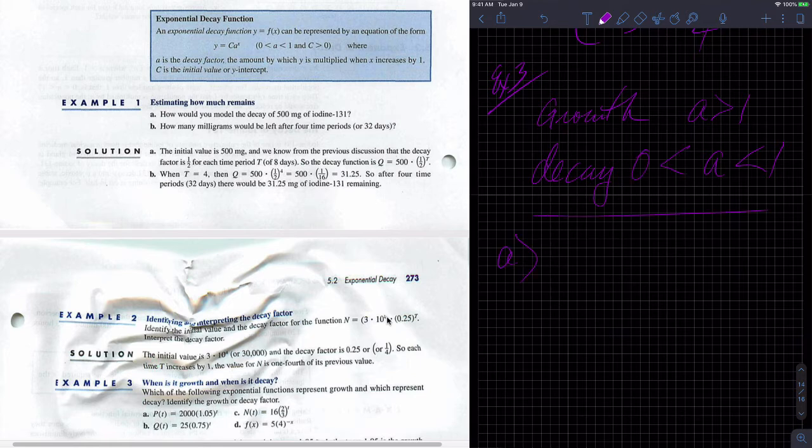So how do we do that? A. So A is the following function, P of T equals 2,000, you can just see it on the left of your screen, 1.05 to the T. Since this is A, and A is greater than 1, then part A represents exponential growth.